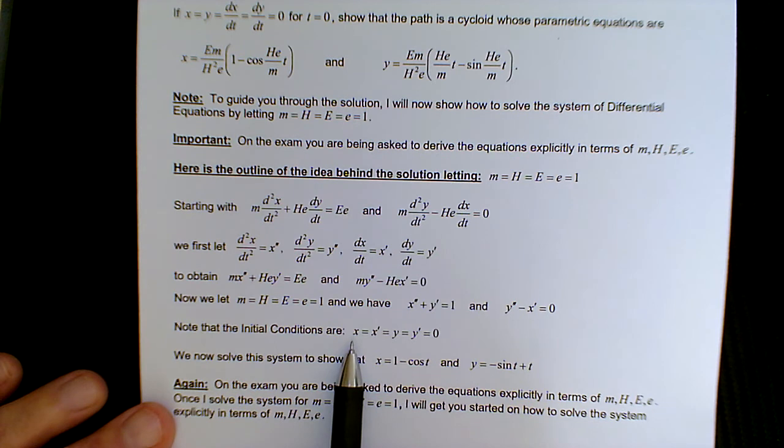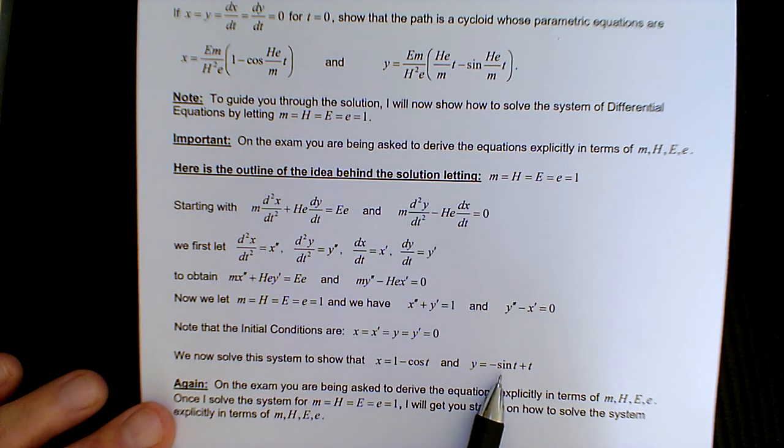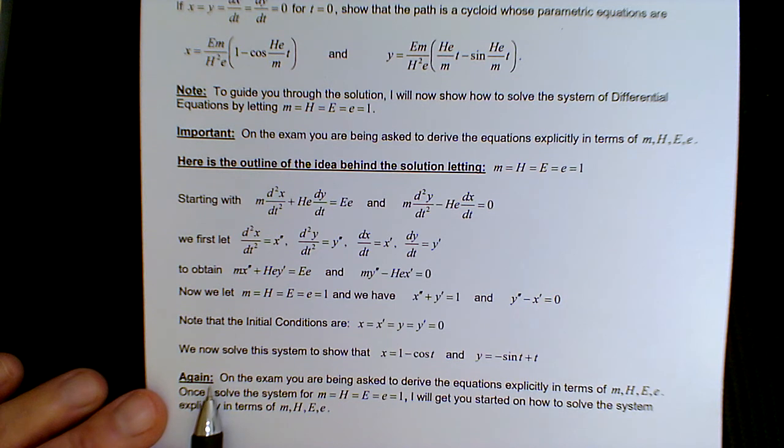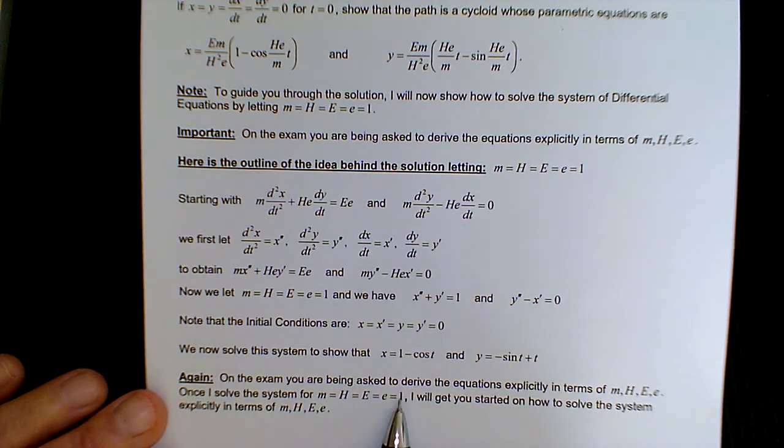The initial conditions would be using, again, the prime notation: x, its derivative, y, and its derivative are all 0. And we're going to solve this system to show that x is 1 minus cosine t, and y is minus sine t plus t, which is the same as t minus sine t, which is the path of a cycloid. And again, here I reiterated the fact that you're going to be asked to derive the equations explicitly in terms of the variables. And once I solve this system, for letting all the coefficients be 1, I'm going to get you started on how to solve it explicitly in terms of those variables.